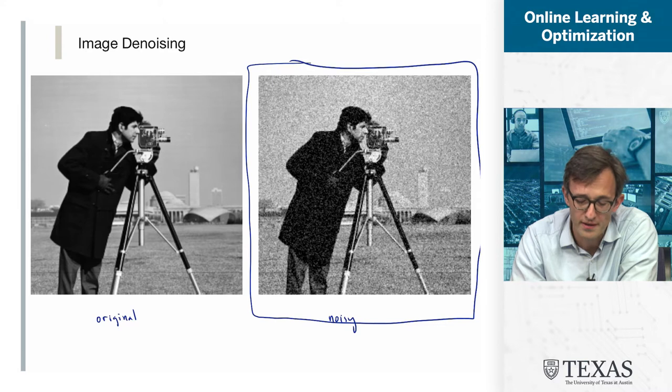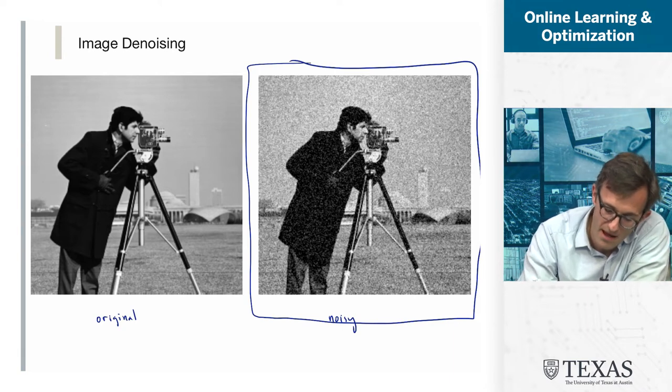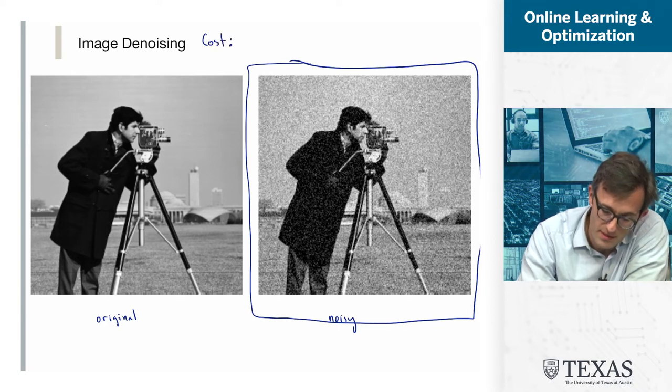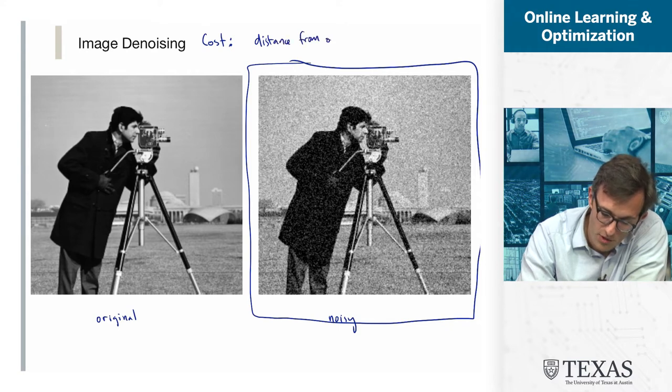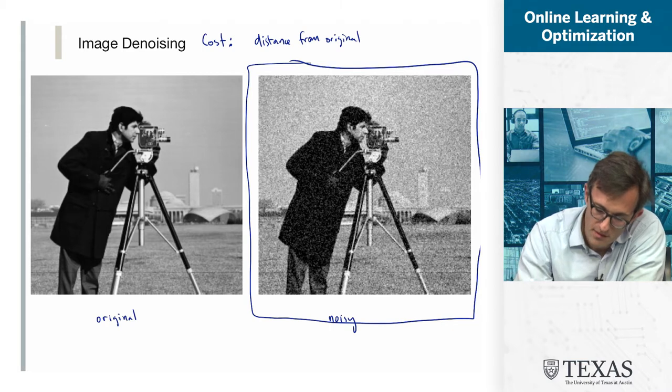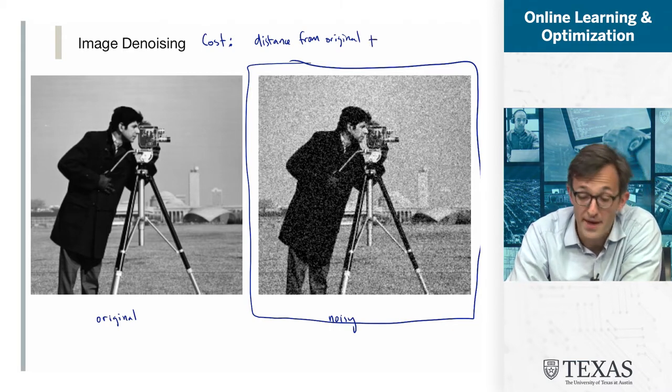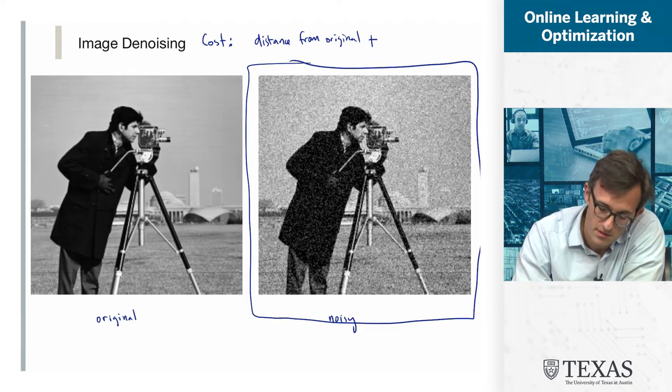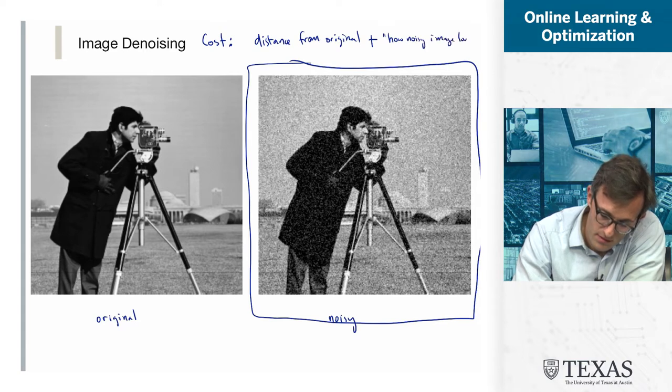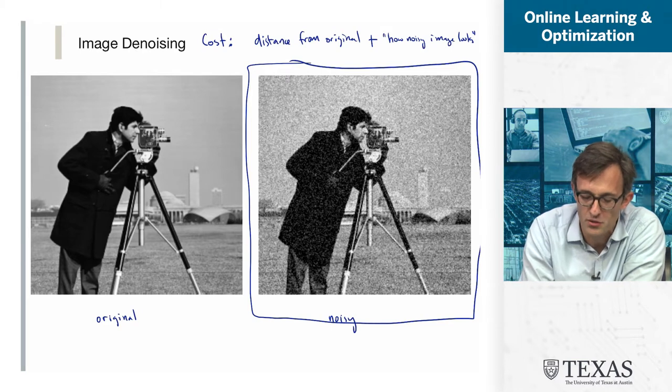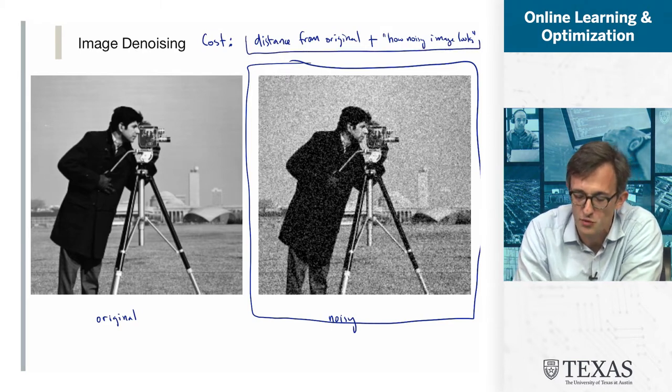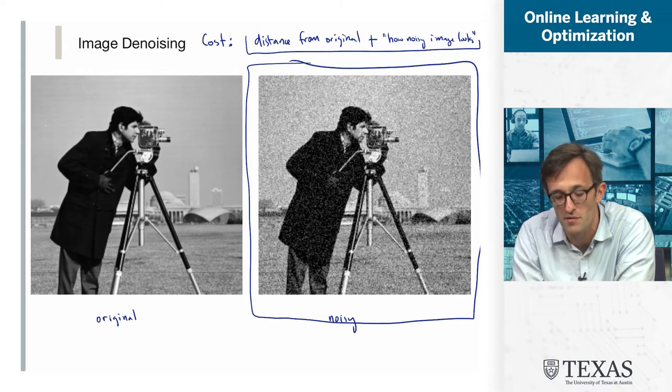And we need to do two things: we need to set all the pixel values so that I make as small as possible a particular cost function. My cost function might be something like distance from the original image plus a penalty for how noisy it looks. This is still abstract, but I hope that you can see that the sum of these two things really is a function of each and every single one of the parameters of the problem.